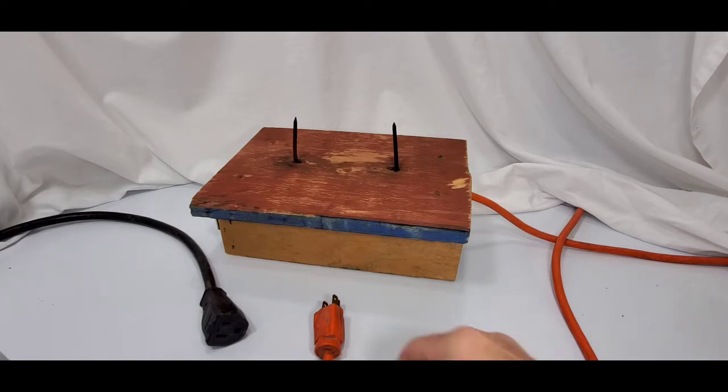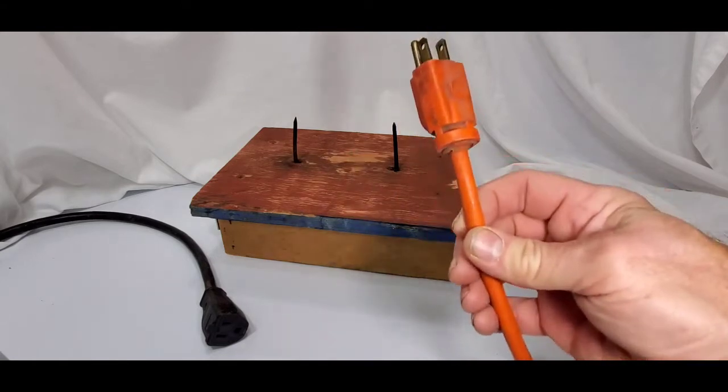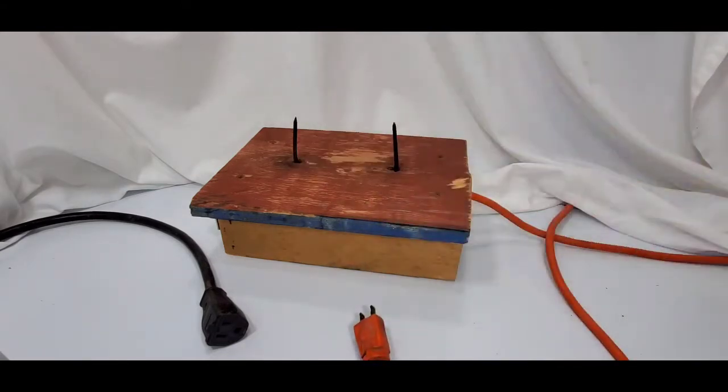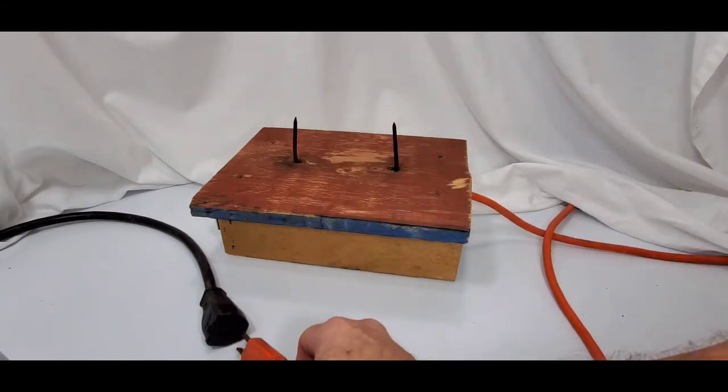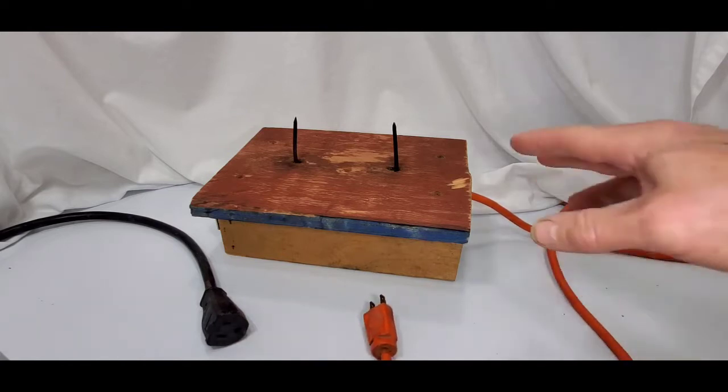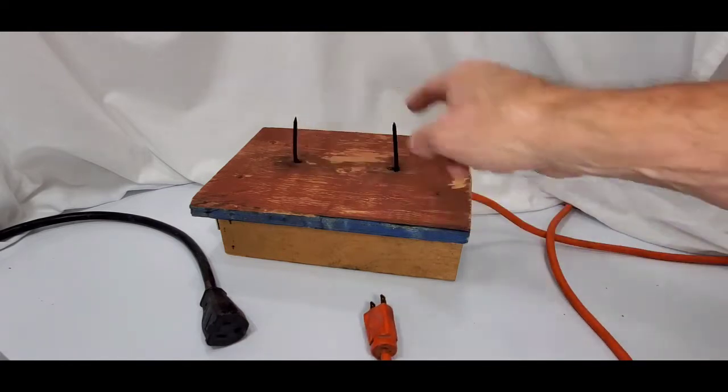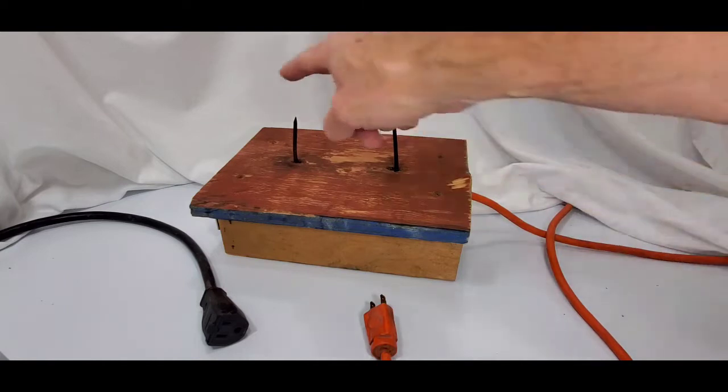Basically I've got a plug attached to two nails, and when I plug this in, electricity will be waiting to go between these two points. If I were to connect a light bulb in there, the light bulb would light up, but I'm not going to connect the light bulb.